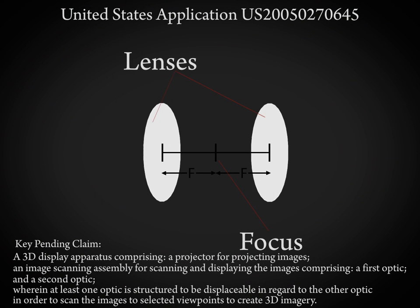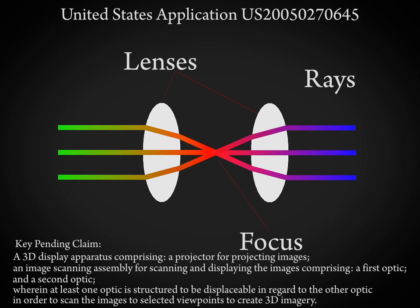One concept taught in this application is using lens arrays to continuously sweep high-resolution imagery from a rapid image source across the viewing zone. For example, consider two lenses configured as shown. Their diameter and focal lengths would be on the order of millimeters. For the sake of discussion, place them so their foci coincide. A bundle of telecentric rays enters the rear of the first lens, comes to a focus in the middle, and then emerges as a bundle of telecentric rays.